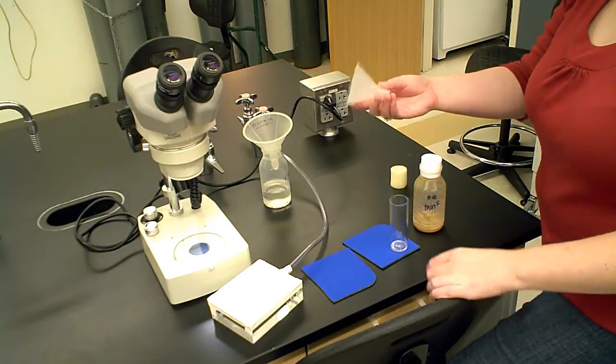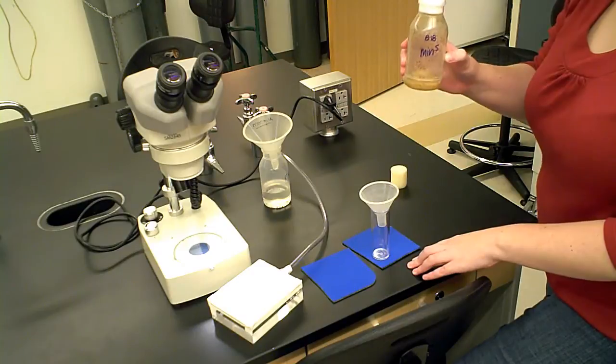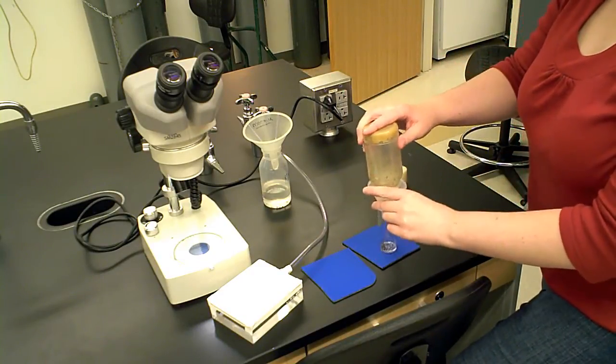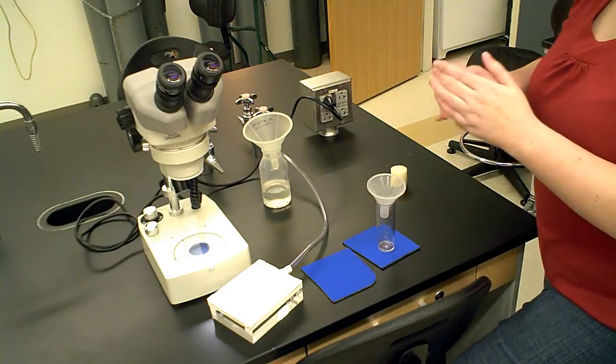You're going to put the funnel into the holding vial. You're going to very gently tap the bottle so that the flies fall down and then invert it onto the funnel and gently tap the flies into the holding vial.